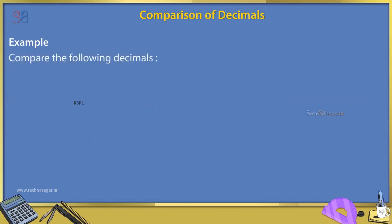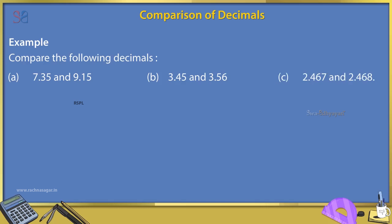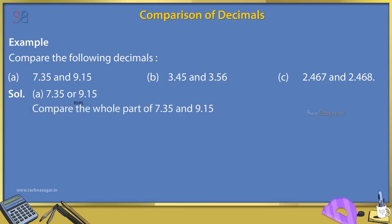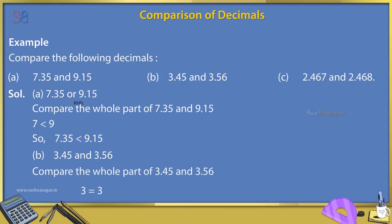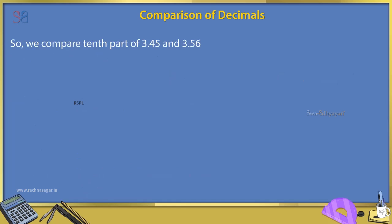Example: Compare the following decimals. A. 7.35 and 9.15. B. 3.45 and 3.56. Solution: A. Compare the whole parts: 7 < 9, so 7.35 < 9.15. B. Compare the whole parts of 3.45 and 3.56: 3 = 3. So compare tenth parts: 4 < 5, so 3.45 < 3.56.